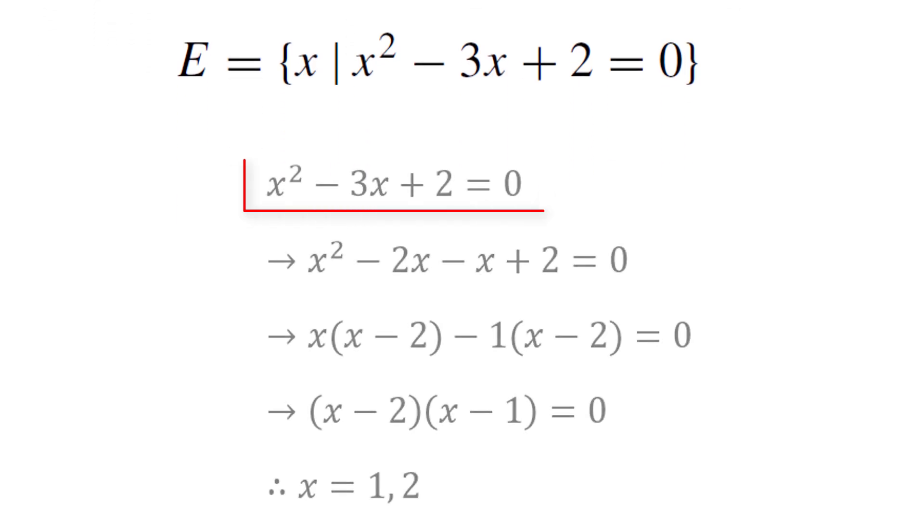Here, x squared minus 3x plus 2 equals zero. We can write x squared minus 2x minus x plus 2 equals zero. Then we can take the x common from here and minus 1 common from here, and then we can take x minus 2 common from these two terms. Then we get (x minus 2) multiplied with (x minus 1) equals zero. That means x equals 1 and 2. Therefore, E equals {1, 2}.